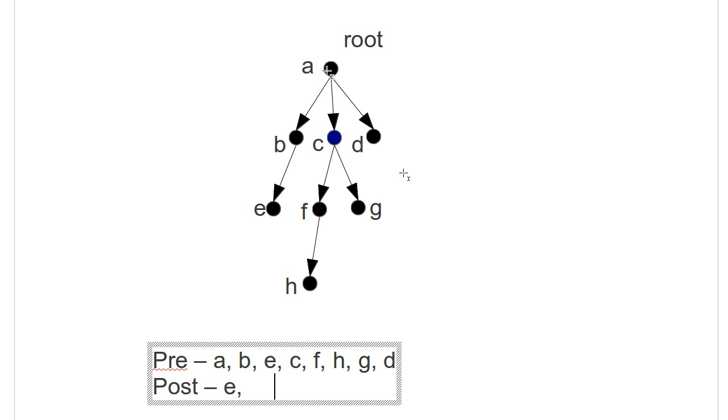We pop back up to A. A still has more children we haven't visited, so we go down to C, and then we go down to F, and then we go down to H. We can visit the H, we pop back up. We've hit all of F's children, so we can visit the F. We pop back up. We still aren't done with everything under C, so we go down here to the G. We pop back up. Now we're done with all of C's children. We pop back up. Then we go to the D, and we finish off with the A.